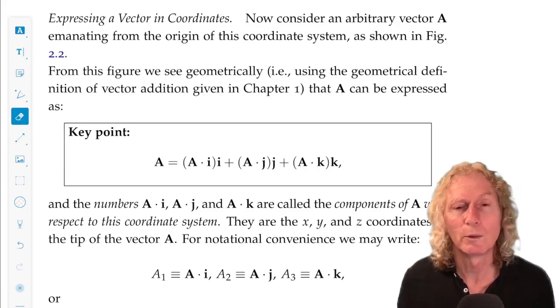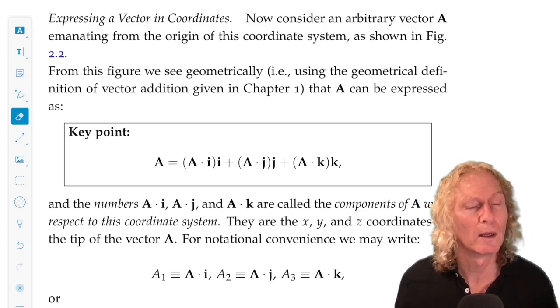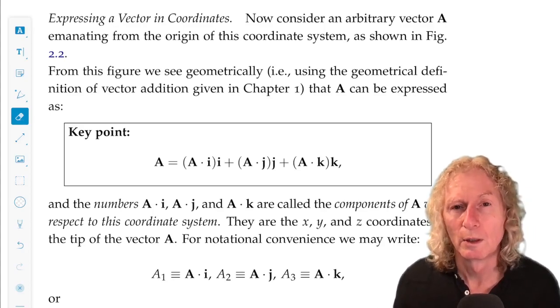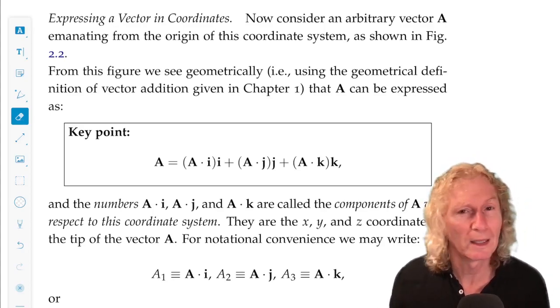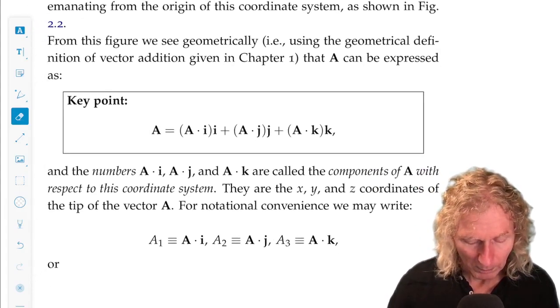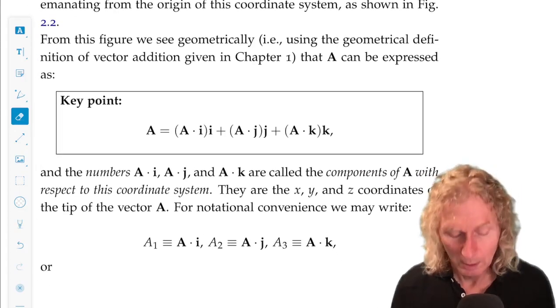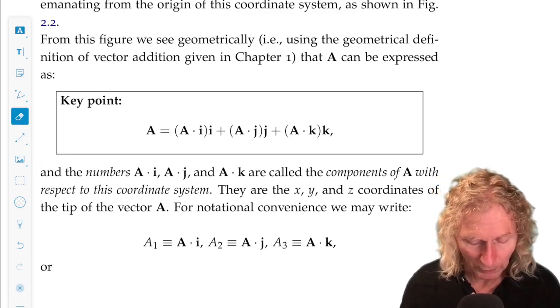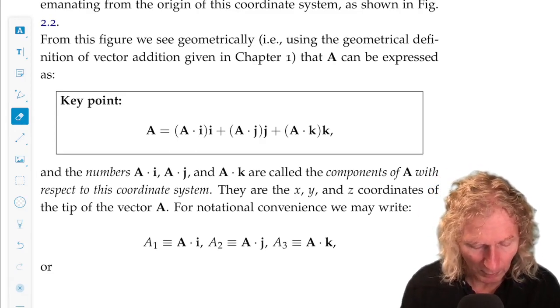We know from the previous chapter that a vector is a directed line segment. It has a direction and a length, and we can move it all around 3 space as long as we retain the direction and the length, and it's the same vector.